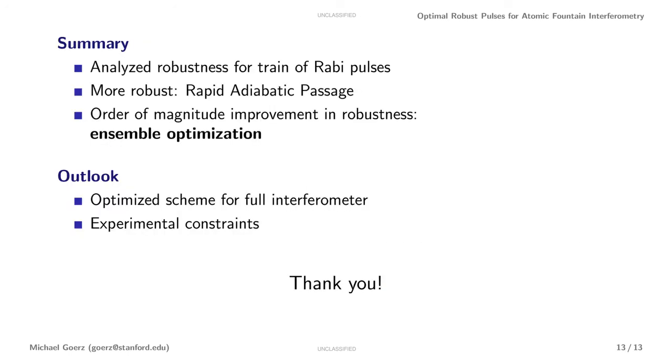With this, I'd like to conclude. I've shown you an analysis of the robustness for the standard scheme of driving an atomic fountain interferometer with a sequence of Rabi pulses. As an alternative scheme, we found that using rapid adiabatic passage is already considerably more robust. Going beyond analytical schemes, I showed that ensemble optimization can give you amazing improvements in robustness. Going forward, we will apply the use of optimal control theory to the full interferometer and apply additional experimental constraints.